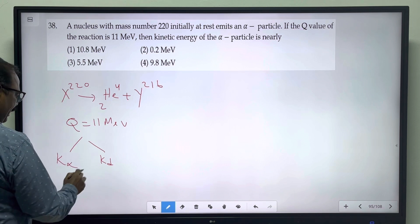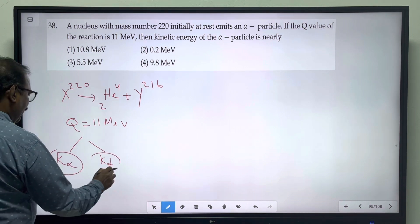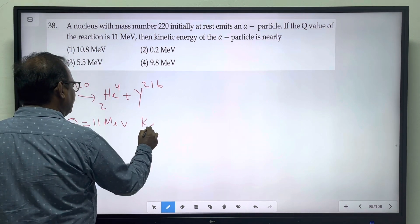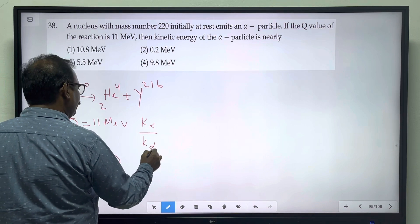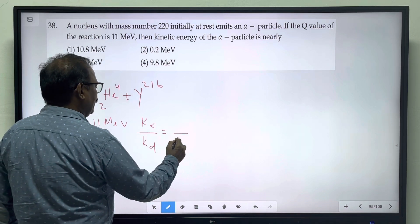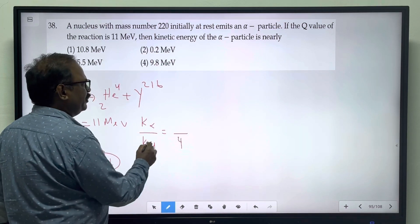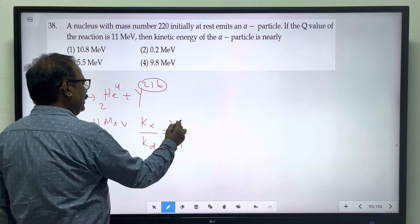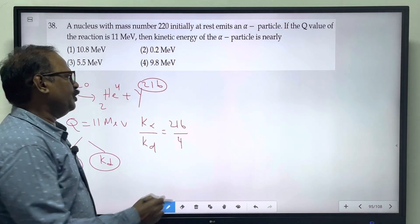For the alpha particle, kinetic energy, and the daughter nucleus, kinetic energy, it will be in this ratio. In the formula, it is mass of the alpha particle compared to mass of the daughter particle. In this ratio, the kinetic energy will be distributed.